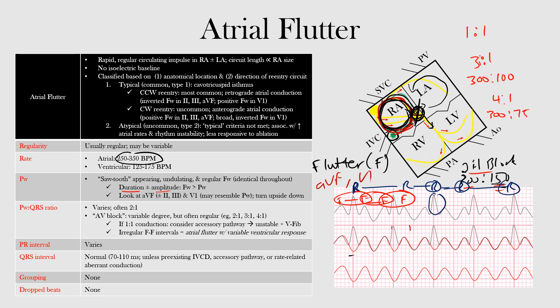To differentiate atrial flutter from paroxysmal atrial tachycardia, the distinction is not based on atrial rate alone since there is overlap. Instead, atrial flutter has characteristic continuous undulating flutter waves and lacks an isoelectric baseline, whereas paroxysmal atrial tachycardia has discrete P waves that can be identified.